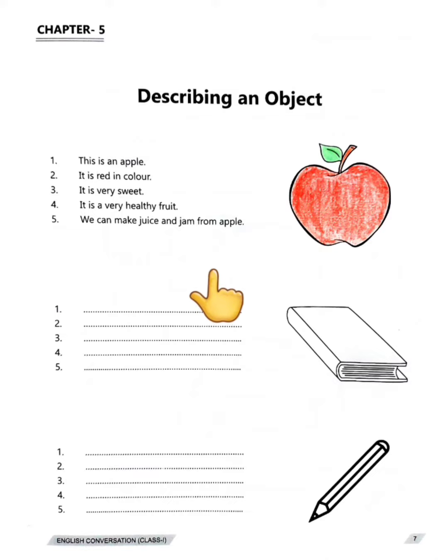Kids, in our previous class we have learnt about picture composition. Means, how to describe an object. In that class we have learnt to describe an apple. Now, we are going to describe another object.